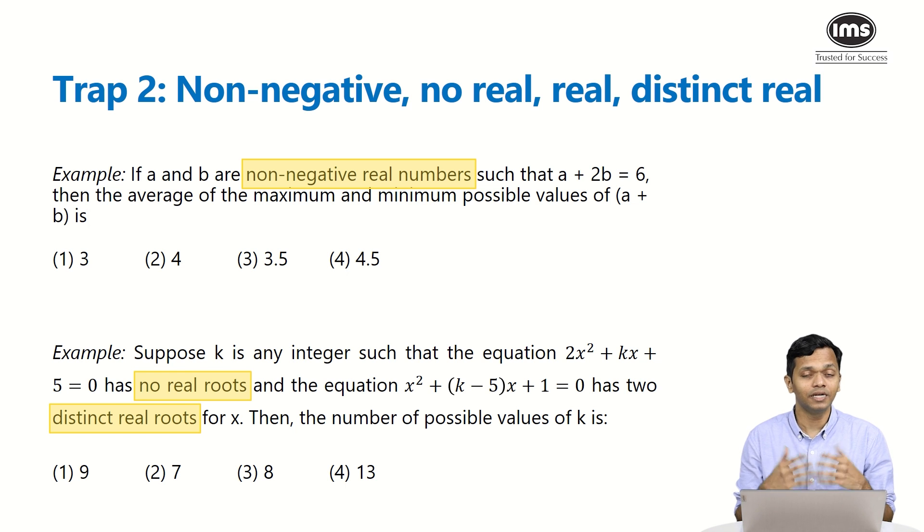Now you have to understand what is no real roots, otherwise it will not be possible for you to answer this question. Similarly, there is another equation where it says that it has two distinct real roots for x. So if your theory is in place, if you understand the concept correctly because you know these words, you will be able to understand that the graph of the first equation that you see is something that will never intersect the x-axis. So it is going to be above the axis, whereas for the second one the graph should be intersecting the x-axis at two different points. So once you have clarity on the meanings of these words, it becomes a little easier for you to interpret the question.